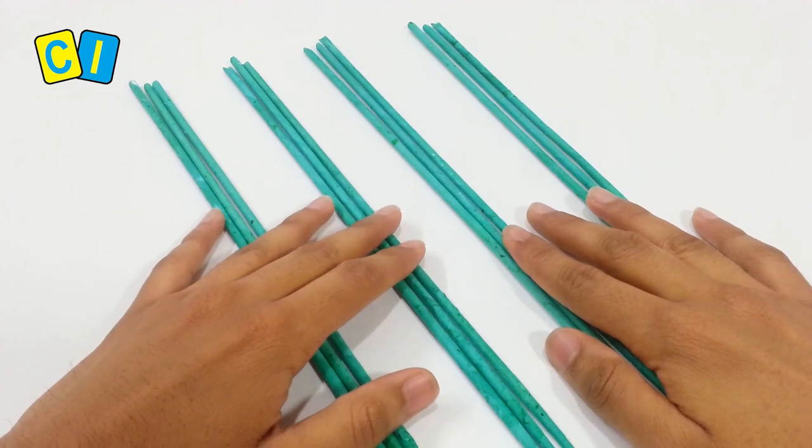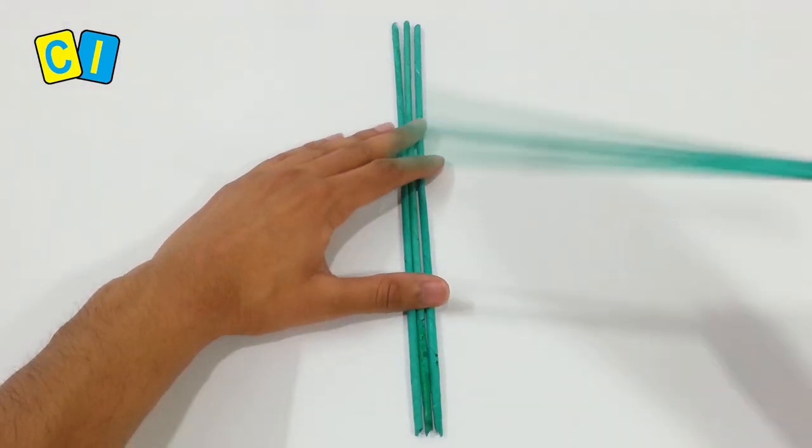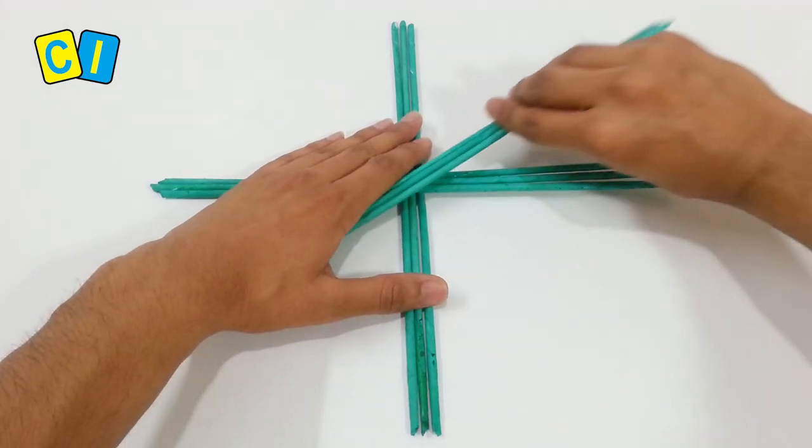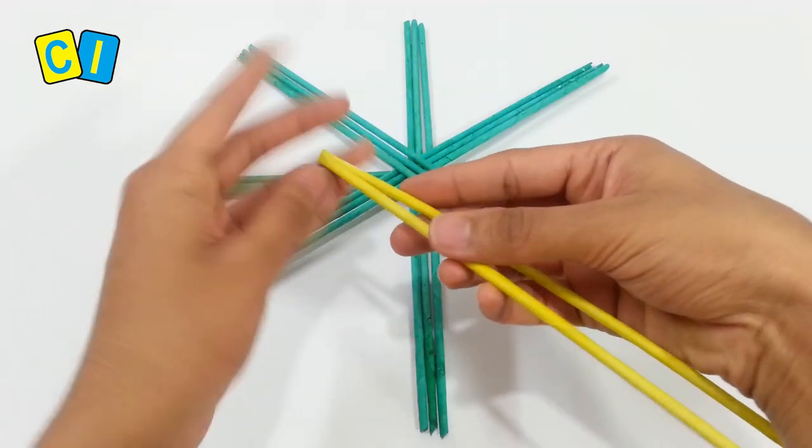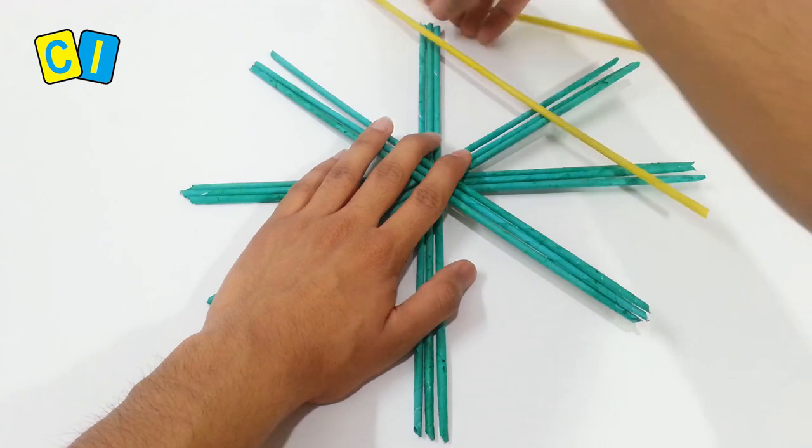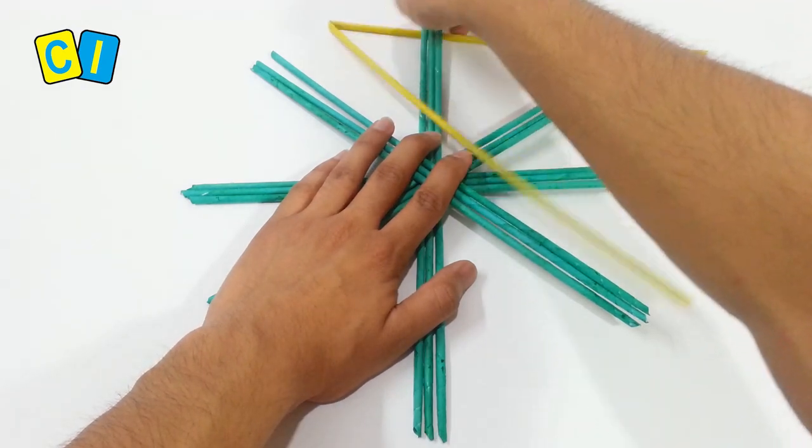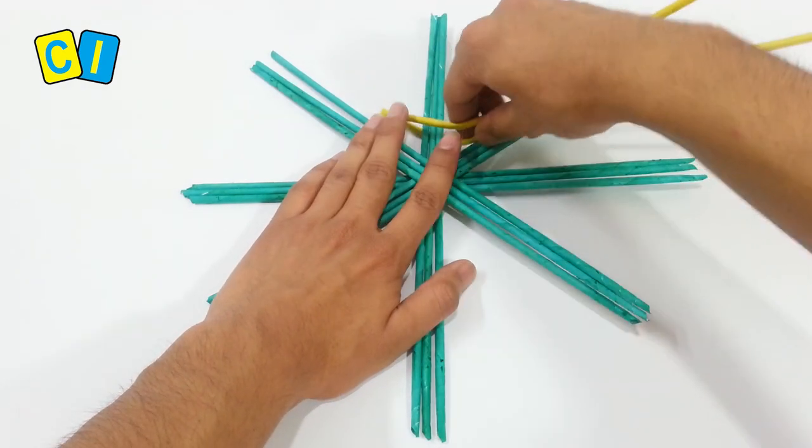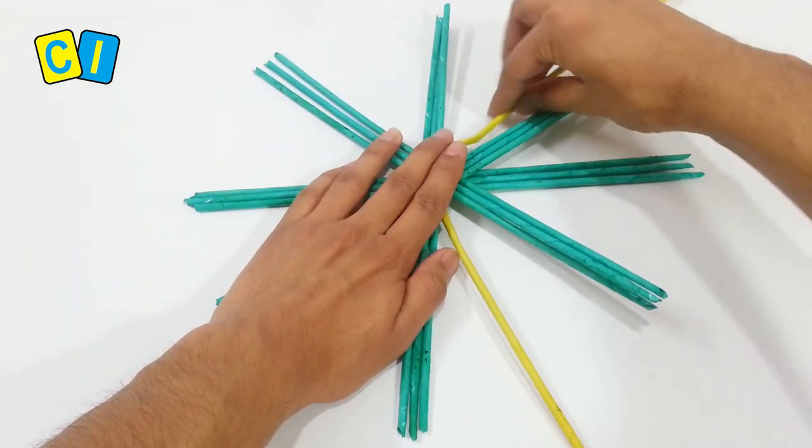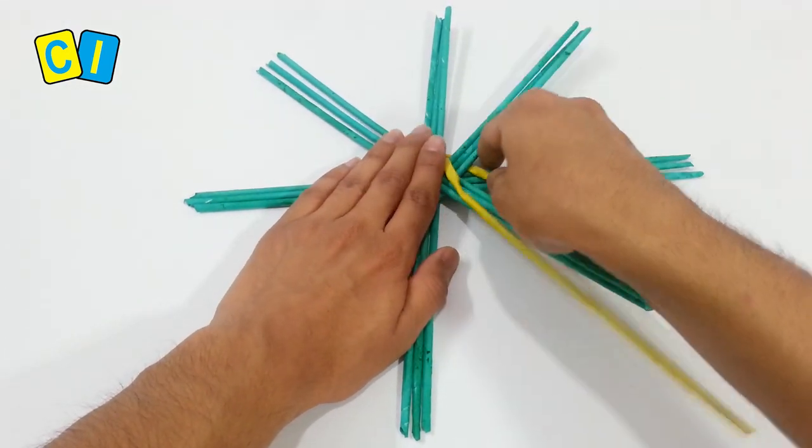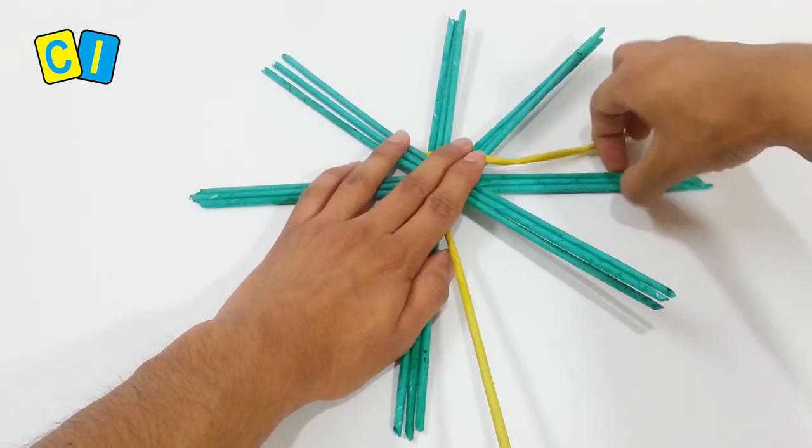Take four groups of three tubes each. Place two groups to make a plus. Place other two groups on top to make a cross. Bend a tube in half and weave using the rope technique. Bring the lower tube up and take the upper tube below. Lower comes up and upper goes down.